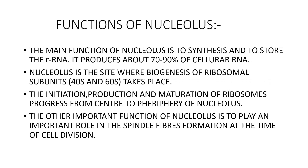Functions of Nucleolus: The main function of the nucleolus is to synthesize and store ribosomal RNA. It produces about 70 to 90% of cellular RNA. The nucleolus is the site where biogenesis of ribosomal subunits 40S and 60S takes place. Three types of ribosomal RNA — namely 18S, 5.8S and 28S — are transcribed as parts of a longer precursor 45S transcript, which undergoes processing.